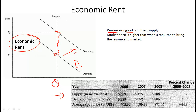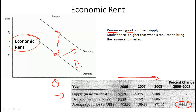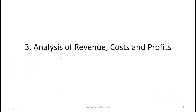In the gold market, between 2006 and 2008, the supply of gold was almost flat — effectively a practically vertical, inelastic supply curve. But demand for gold went from about 3,400 tonnes to 3,800 tonnes — an 11% increase in demand. Over the same period, the price of gold went up by 44%. That increase in price without a change in supply is called economic rent.